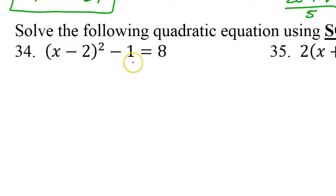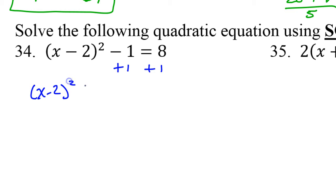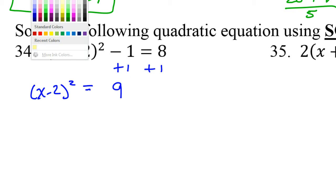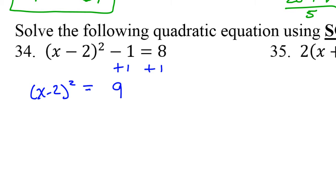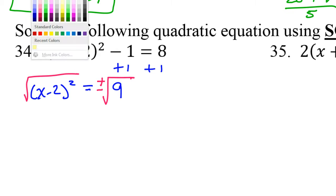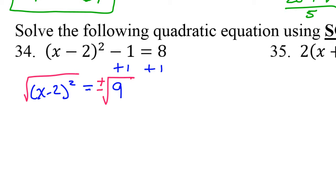On number 34, your first step should have been to add one to both sides. That's going to leave you with x minus 2 squared is equal to 9. Then take the square root of both sides, being careful not to forget plus or minus. So that's going to leave us with x minus 2 is equal to plus or minus 3.